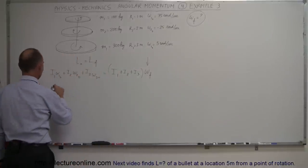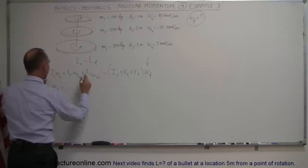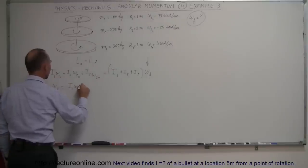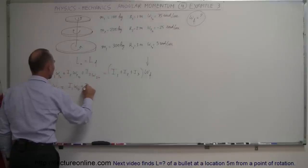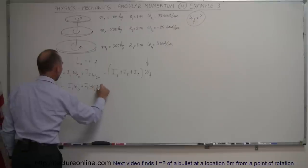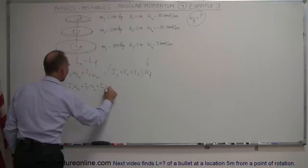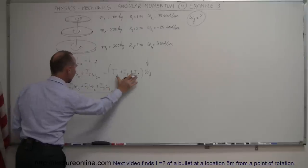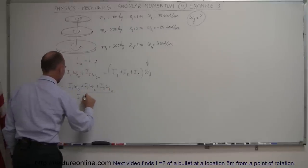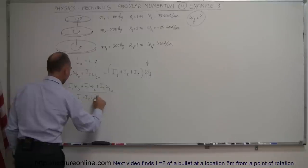So omega final is therefore equal to the left side of the equation — I1·ω1_initial + I2·ω2_initial + I3·ω3_initial — all divided by the sum of the moments of inertia: I1 + I2 + I3.